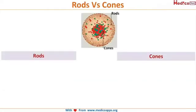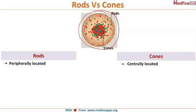This is your fundus with its distribution of rods and cones. You can see the cones are concentrated more in the center — all these colored dots are our cones and the white colored dots are rods. So rods are peripherally located and cones are centrally located.